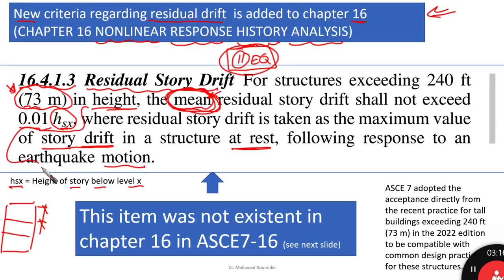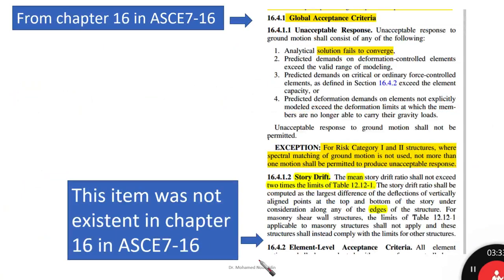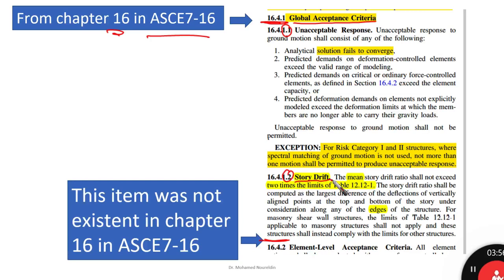Residual story drift is taken as the maximum value of story drift in a structure at rest following response to an earthquake motion. This item was not existent in chapter 16 of ASCE 7-16. Looking at section 16.4.1, Global Acceptance Criteria in ASCE 7-16, you only find subsections 1.1 and 1.2 — there is no 1.3.